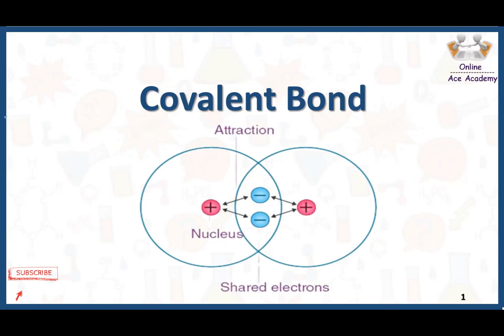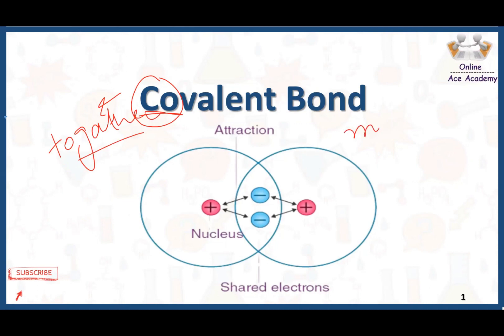In today's video, we are talking about covalent bond. What is the meaning of 'co' here? The meaning of 'co' here is 'together.' A bond that is formed by a mutual or equal sharing of electrons between two atoms is called a covalent bond.